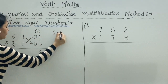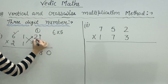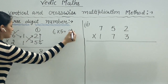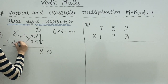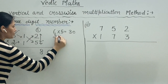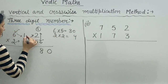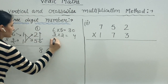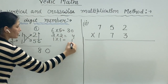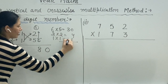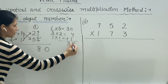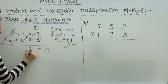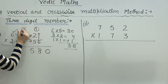Next, we do crosswise multiplication taking all three digits. First we multiply six and five crosswise — five sixes are thirty. Then two with two: two twos are four. Then vertically one into one is one. We add all the terms: thirty plus four plus one is thirty-five. Put five here and three as a carry.